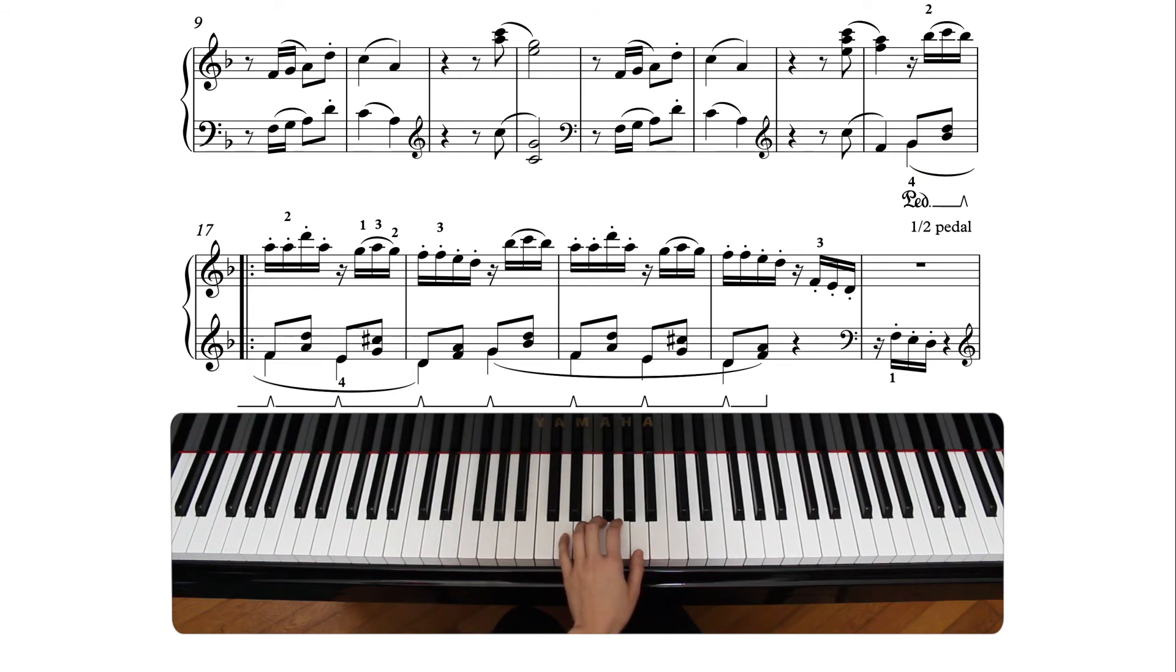Fingering-wise, we can connect G in measure 16 to F in measure 17, no problem, with 4 on G and 5 on F. To connect from F to E, which is 5 on F and 4 on E, it's a bit more difficult.